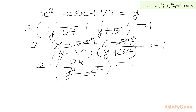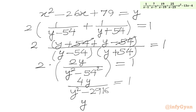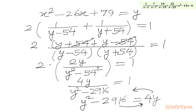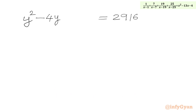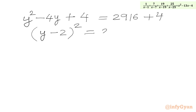We know that 54 squared is 2916. So we have 4y over (y squared minus 2916) equal to 1. Cross multiplying gives y squared minus 4y equal to 2916. Now we apply the completing the square method. The coefficient of y is negative 4; half of that is negative 2, and its square is 4. Adding 4 to both sides gives (y minus 2) squared on the left and 2920 on the right.